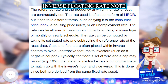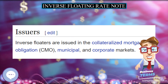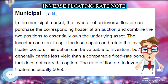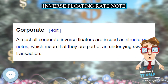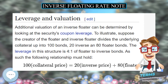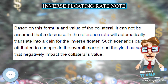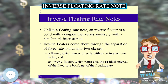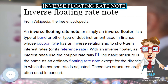Additional valuation of an inverse floater can be determined by looking at the security's coupon leverage. To illustrate, suppose the creator divides the underlying collateral into 100 bonds — 20 inverse and 80 floater bonds. The leverage in this structure is 4 to 1 of floater to inverse bonds. Based on this formula and the value of the collateral, it cannot be assumed that a decrease in the reference rate will automatically translate into a gain for the inverse floater. Such scenarios can be attributed to changes in the overall market and the yield curve that negatively impact the collateral's value.